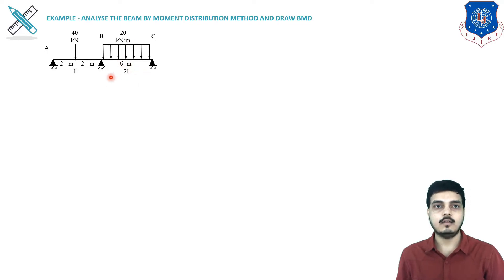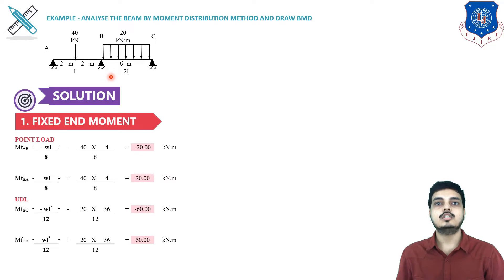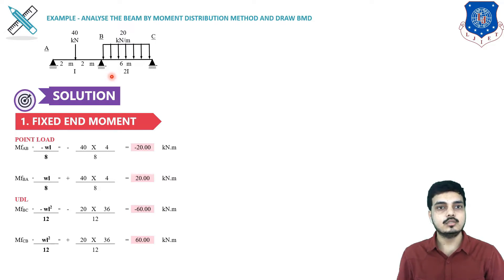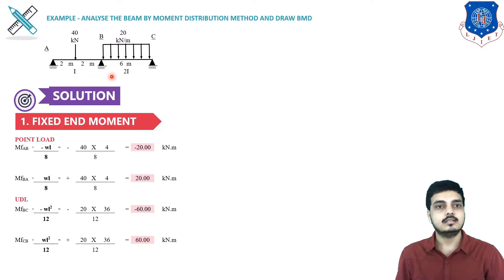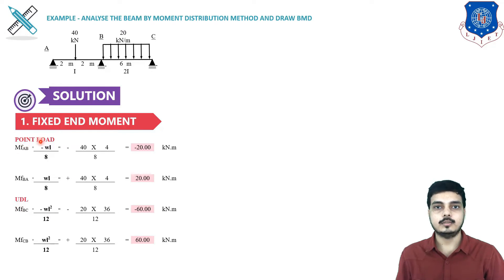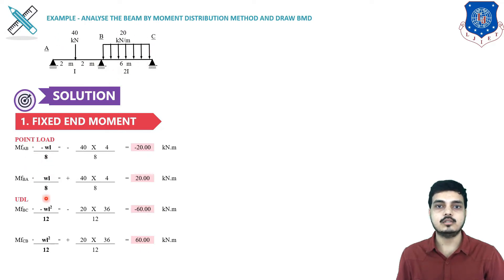The first step is to find the fixed end moment. We use the same formulas used in the slope deflection method — the point load formula and the UDL formula. For the AB span with a central point load we use the point load formula, and for the BC span with a UDL we use the UDL formula.